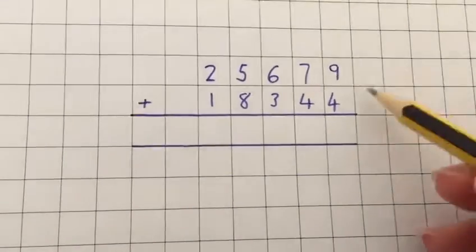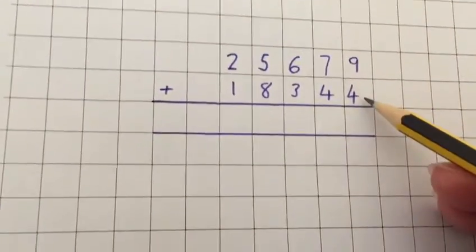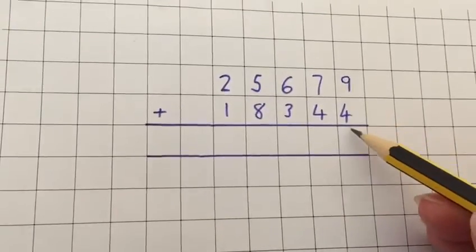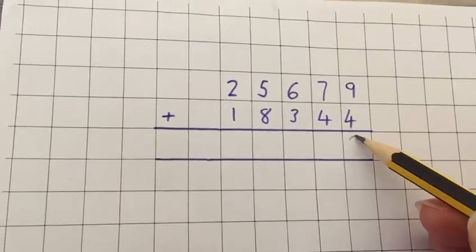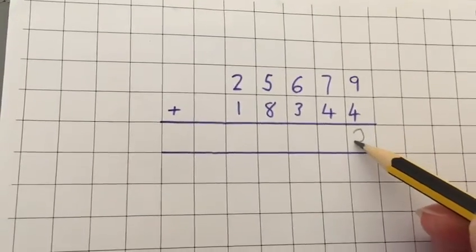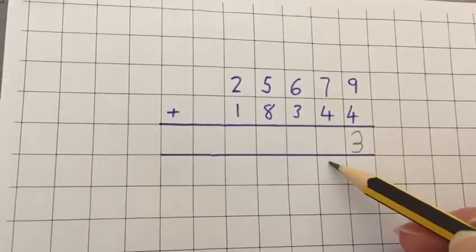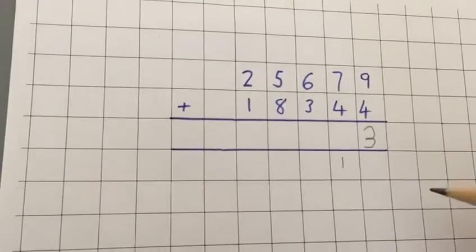So we're going to start off by using the 9 and the 4 and adding the units together. So what you've got there then is you've got 13. So you'd put your 3 in and you'd make sure you exchange your 1 over into your next column.